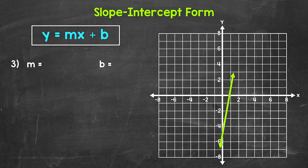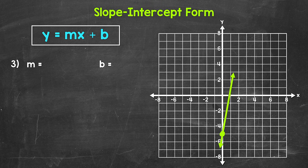Let's move on to number three. We have a line with a positive slope — it's moving upward as it moves from left to right. For this example, I don't have the points clearly marked on the line like I did for numbers one and two, but we're going to do the exact same thing. We just need to find those points. Our y-intercept is down here at negative five. We need to find another point on the line that we can easily read at a grid intersection, where we can clearly find the rise and run.